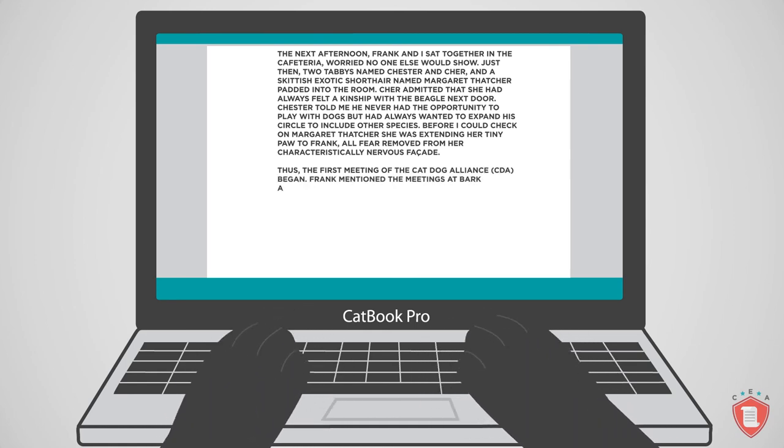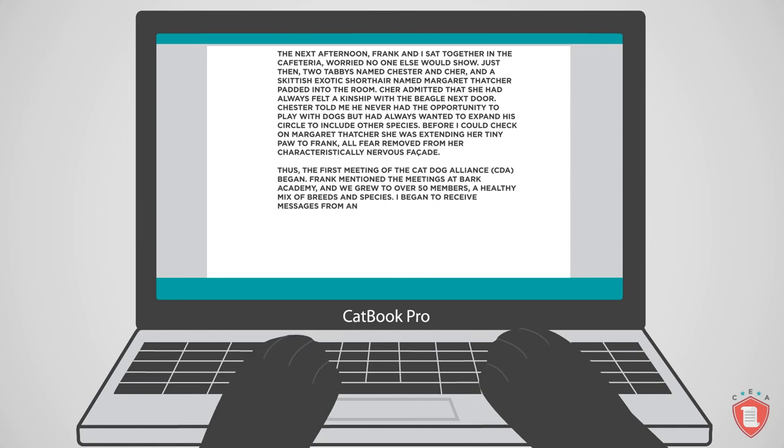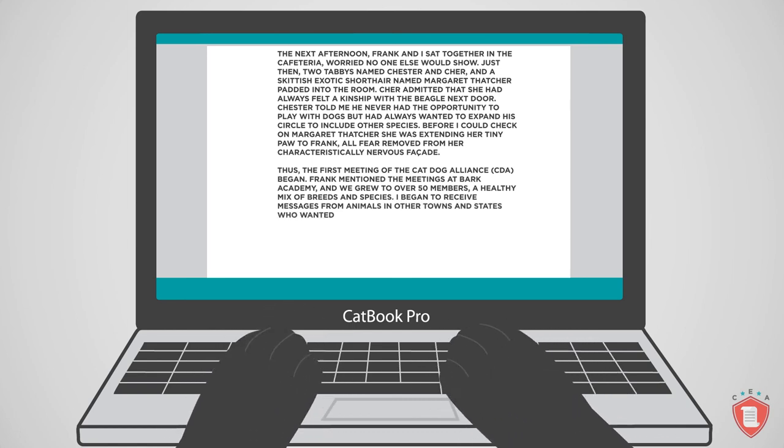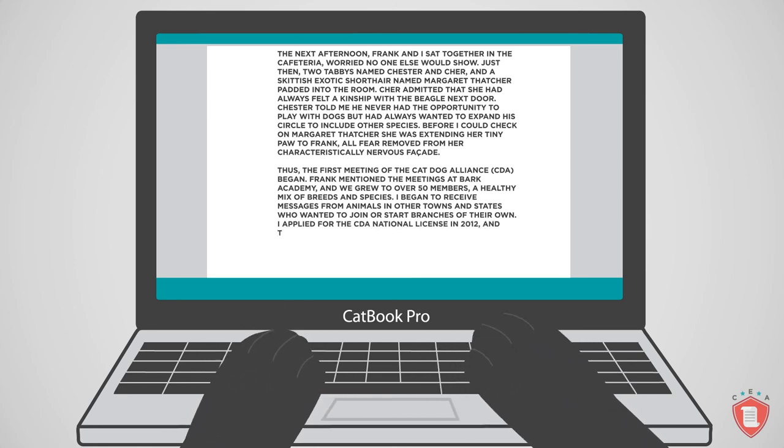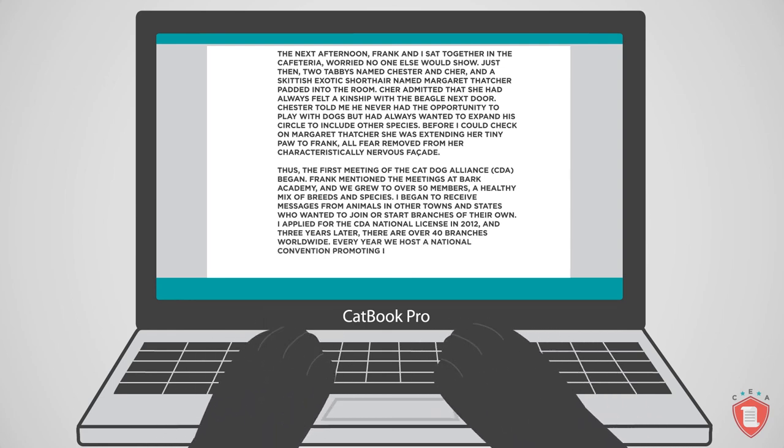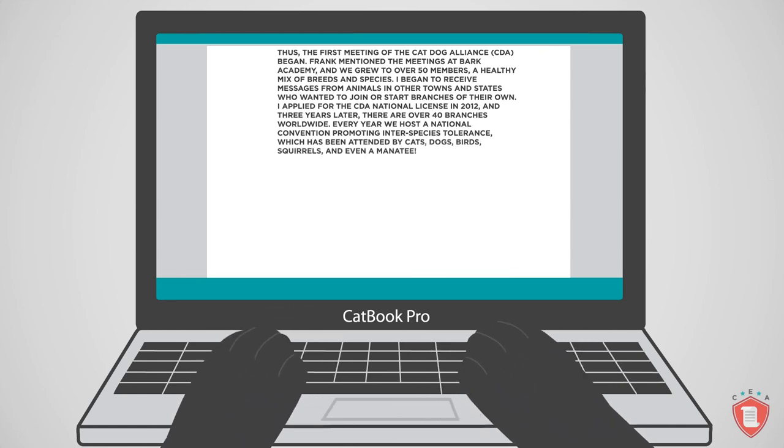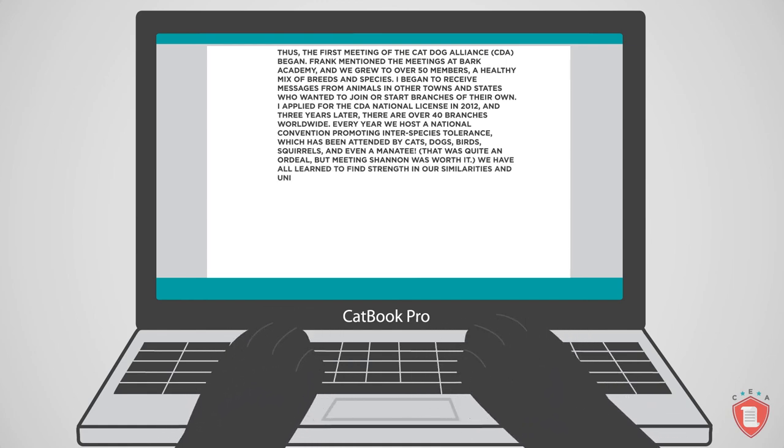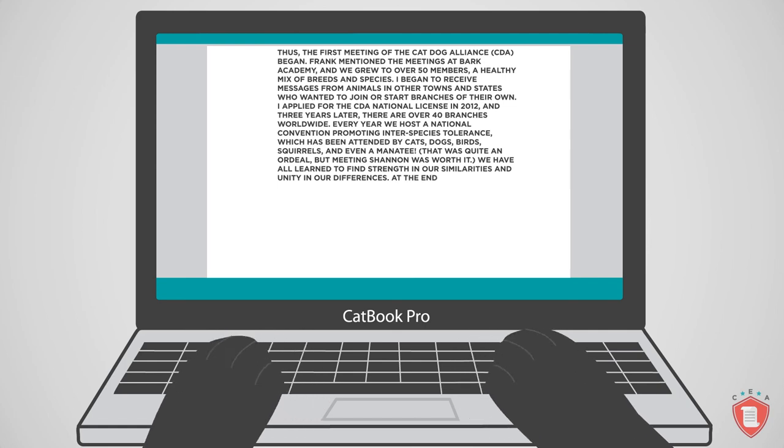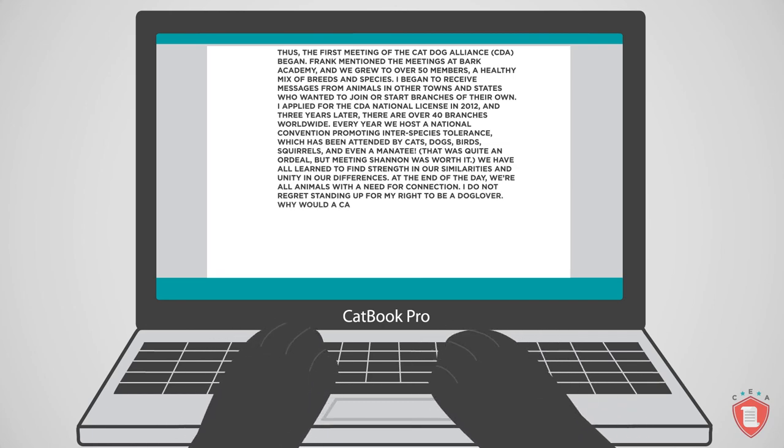Frank mentioned the meetings at Bark Academy and we grew to over 50 members, a healthy mix of breeds and species. I began to receive messages from animals in other towns and states who wanted to join or start branches of their own. I applied for the CDA national license in 2012 and three years later, there are over 40 branches worldwide. Every year, we host a national convention promoting interspecies tolerance, which has been attended by cats, dogs, birds, squirrels, and even a manatee. That was quite an ordeal, but meeting Shannon was worth it. We have all learned to find strength in our similarities and unity in our differences. At the end of the day, we're all animals with a need for connection. I do not regret standing up for my right to be a dog lover. Why would a cat want to be anything else?